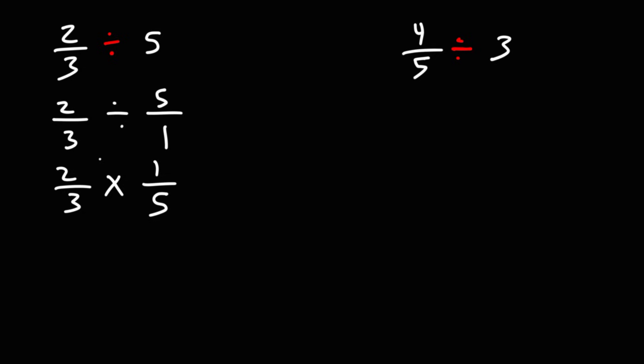So now we can multiply across. 2 times 1 is 2. 3 times 5 is 15. So the answer is going to be 2 over 15.